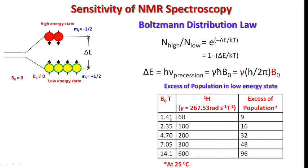If we are applying the external magnetic field for 1.41 tesla, that is 60 megahertz is the operating frequency of the spectrometer, then only 9 nuclei are in excess. And if we increase this applied external magnetic field, the number of nuclei present in the low energy state for this proton nuclei at 25 degrees centigrade increases.